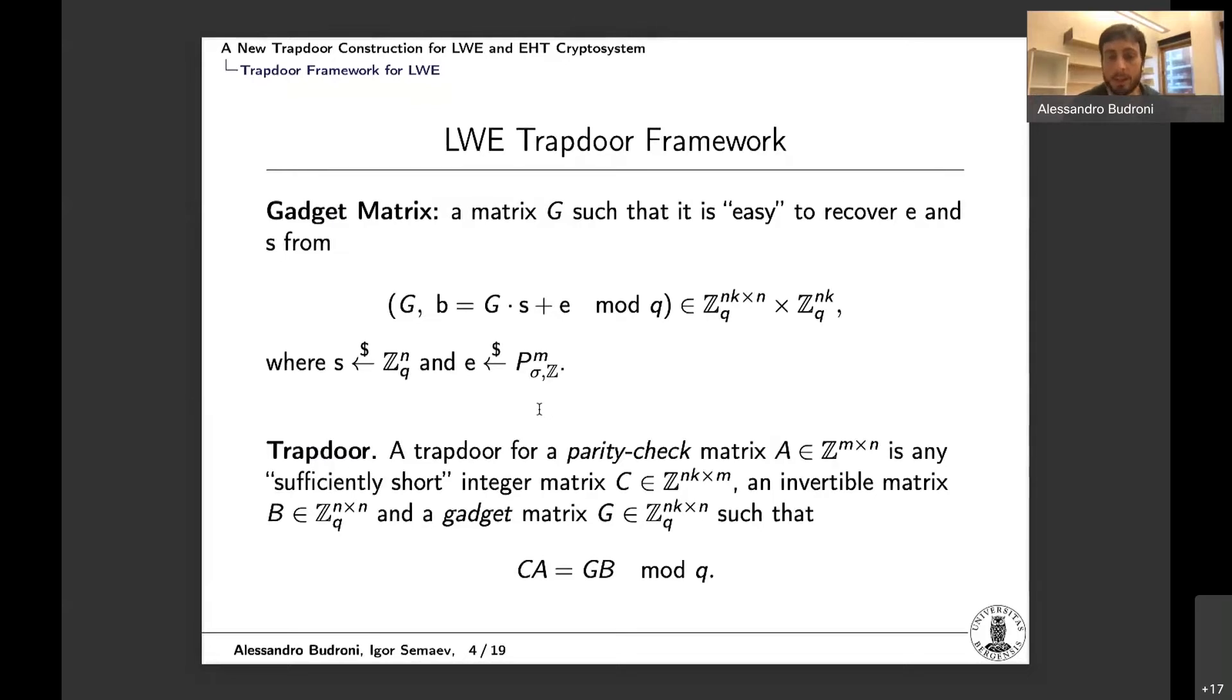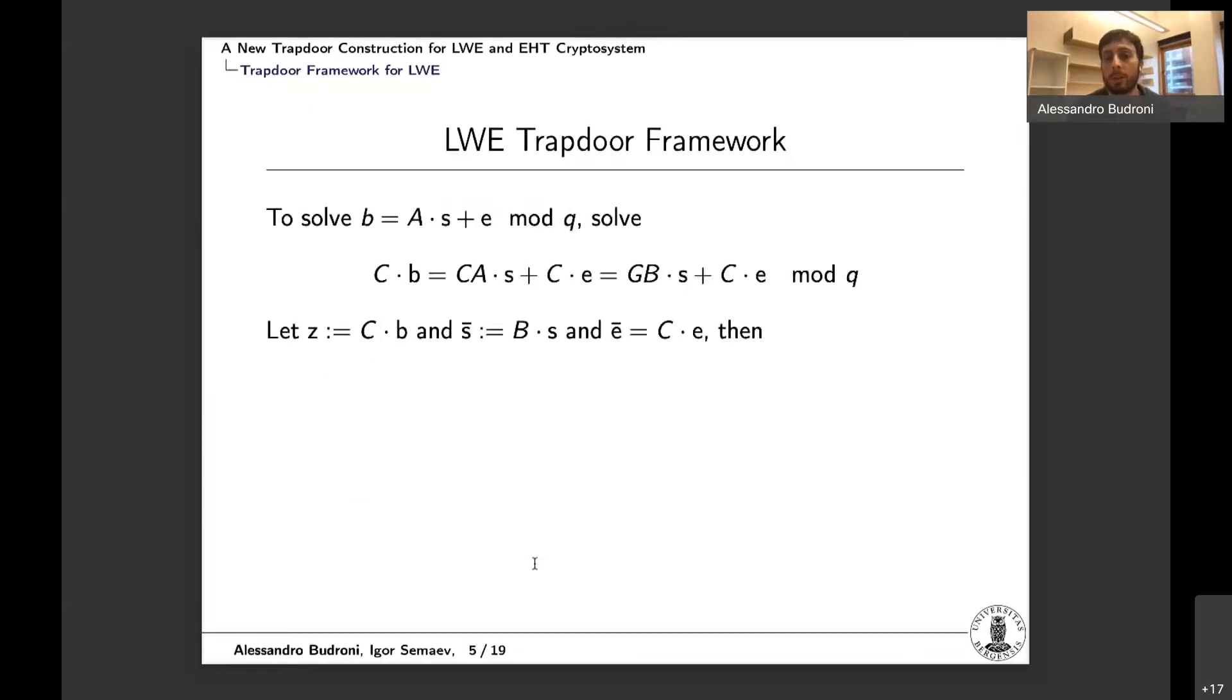So next I'm going to introduce the definition of the trapdoor. For a parity check matrix A, a trapdoor is a short integer matrix C, an invertible matrix B, and a gadget matrix G such that we have this relation: C times A is equal to G times B modulo Q. And this relation, we will see it later many times during my talk. I will refer to it as the trapdoor equation.